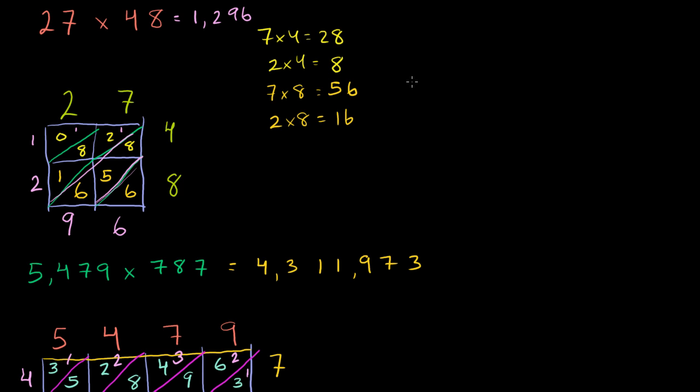So when we multiplied 27, you write your 2 and your 7 just like that, times 48. I'm just doing exactly what we did in the previous video. We drew a lattice. We gave the 2 a column and the 7 a column, just like that. We gave the 4 a row and we gave the 8 a row. And then we drew our diagonals. And the key here is the diagonals, as you can imagine, otherwise we wouldn't be drawing them.